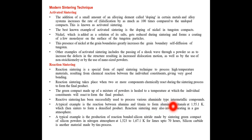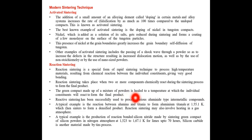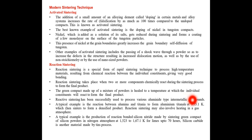Reactive sintering has been successfully used to process various aluminate-type intermetallic compounds. A typical example is the reaction between alumina and titania to form aluminium titanate at 1510 degrees Kelvin.